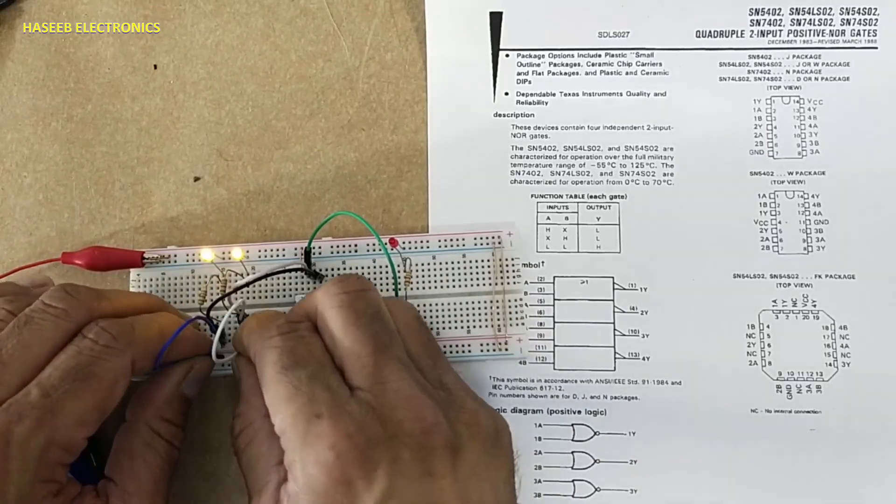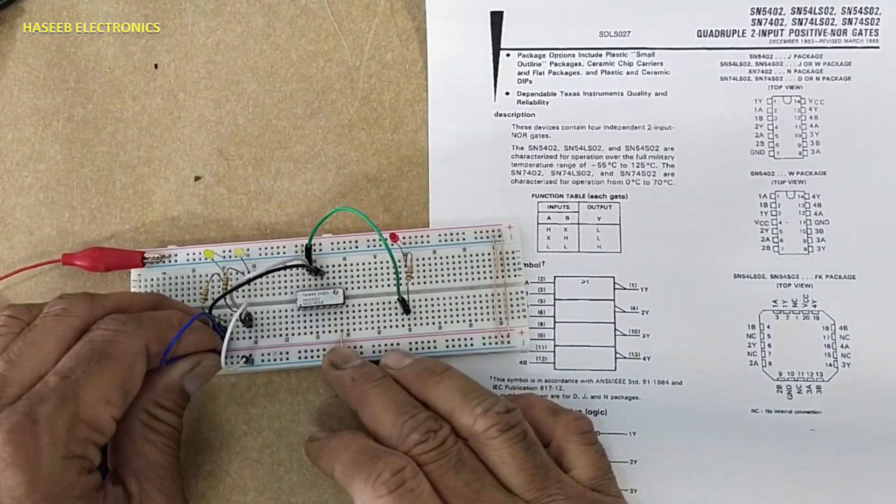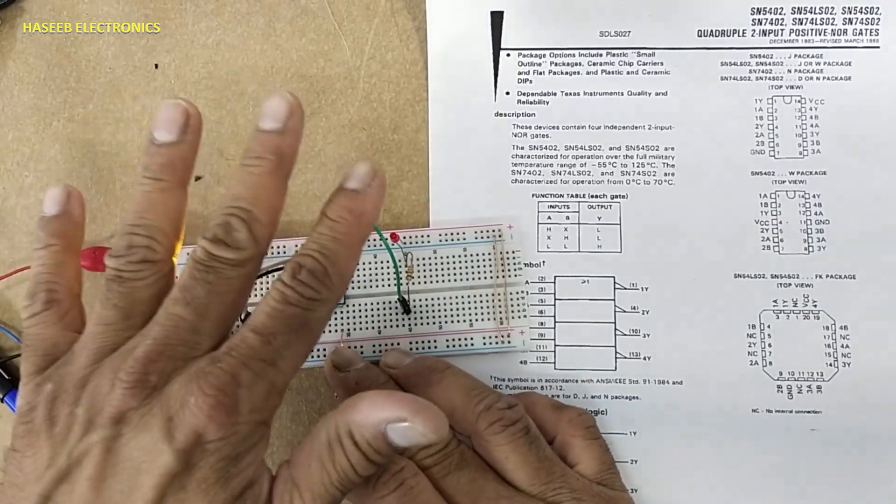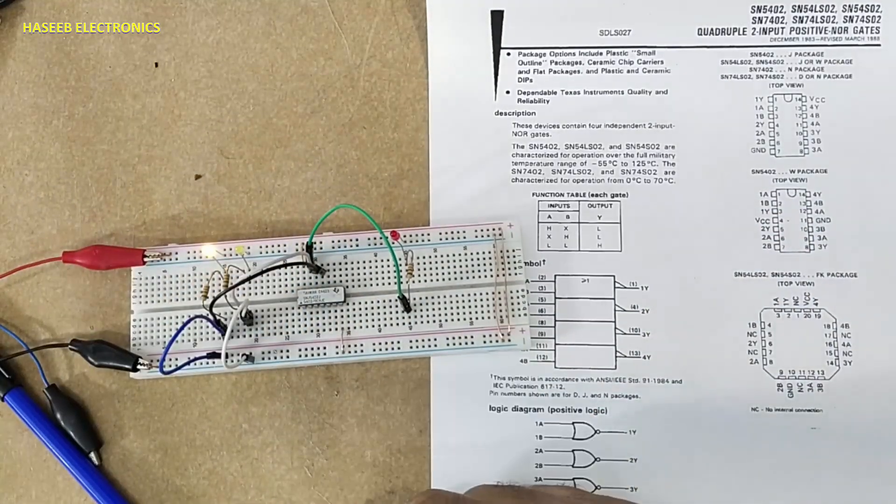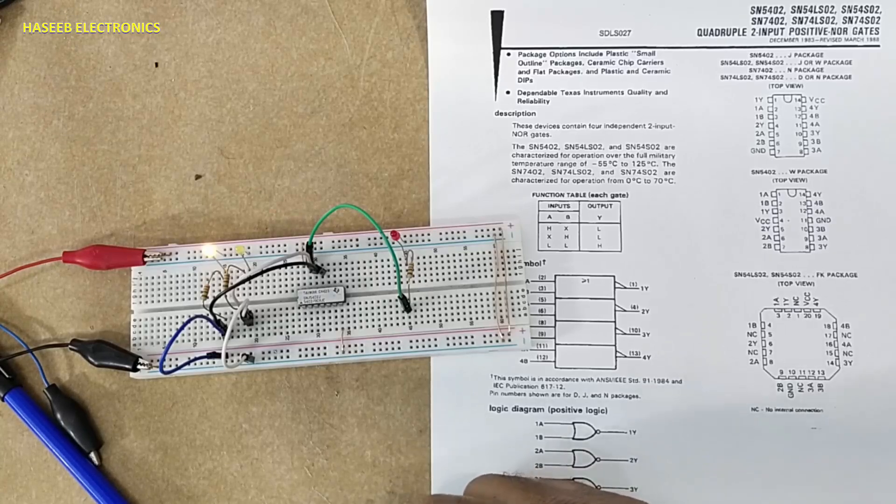All high, output low. All low, output high. Anyone high, output low. If you enjoyed this video, give thumbs up. If you have any question, please write in the comments. Thanks for watching.